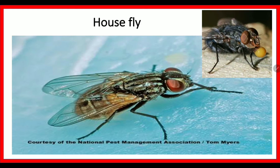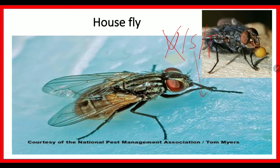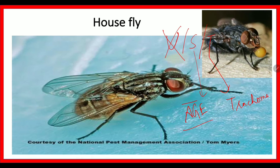Coming to diseases caused by the house fly: using a mnemonic, think of things excreted downward — stool and tears. The house fly causes acute gastroenteritis related to the gut (cholera, typhoid, dysentery, amoebiasis, etc.), and tear-related disease points to the eye — specifically trachoma and conjunctivitis. It also causes anthrax, yaws, poliomyelitis, etc.